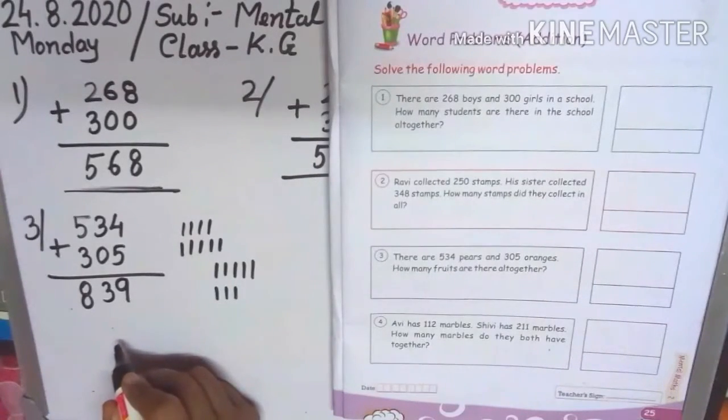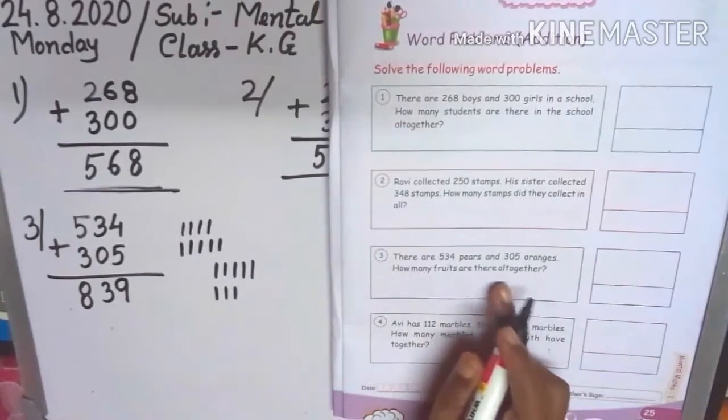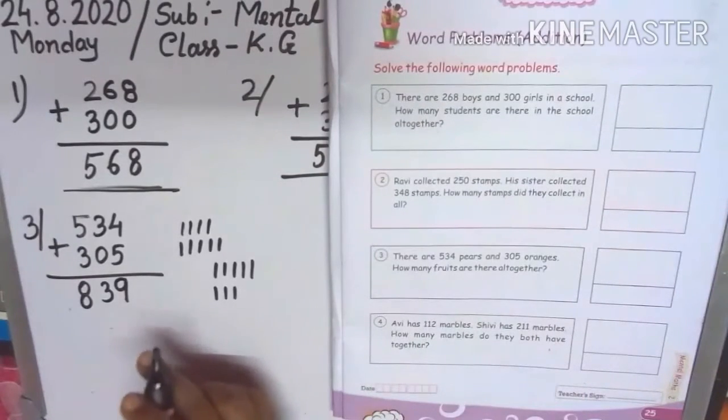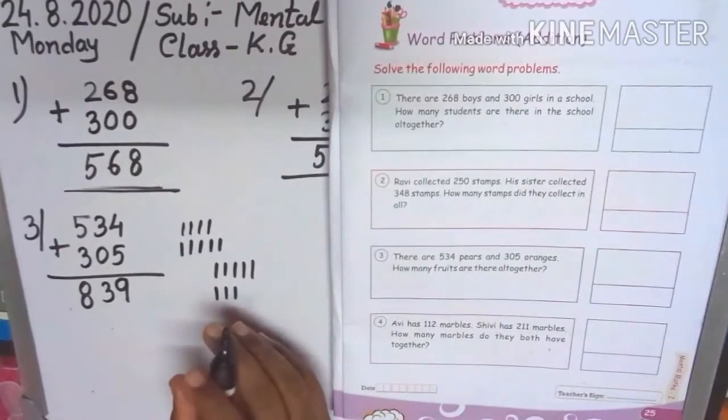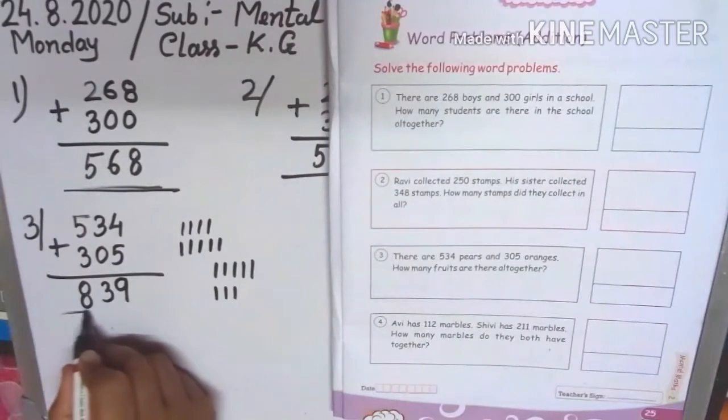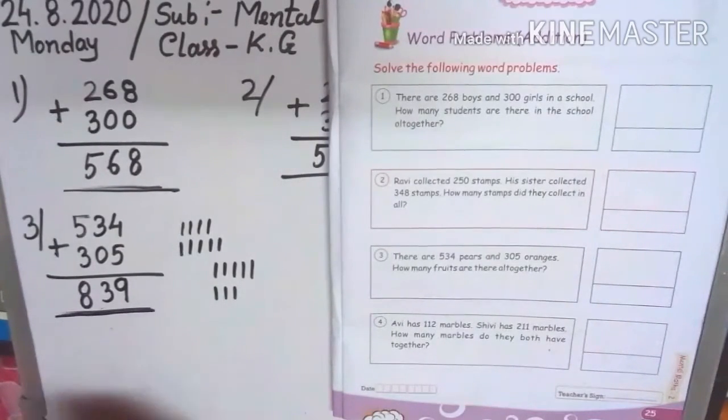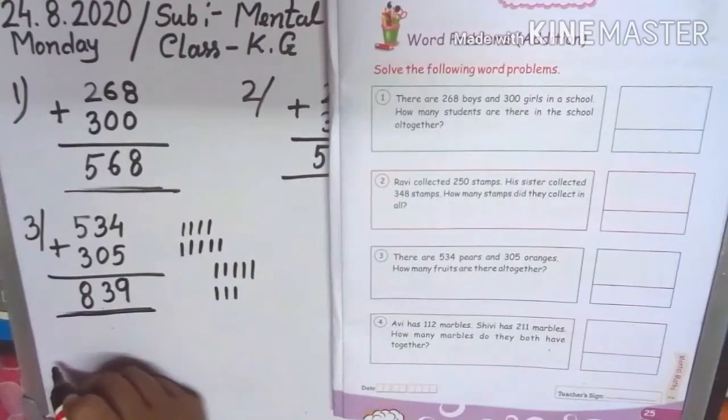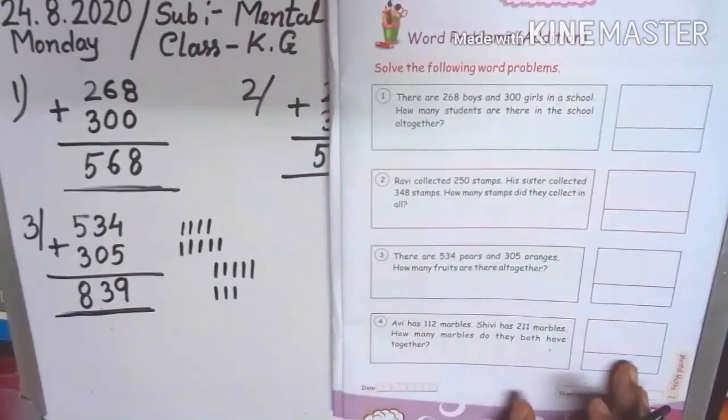So children, how many fruits are there all together? So total number of fruits 839. Answer. Next, 4.